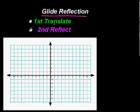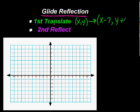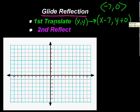Let's do one. My first translation takes (x, y) to (x minus 7, y plus 0) — so we're not going to do anything with the y. That's like having a vector of negative 7 comma 0. Then we're going to reflect over the x-axis.